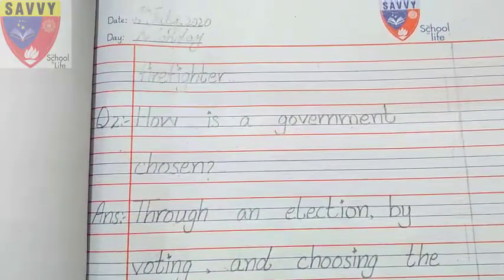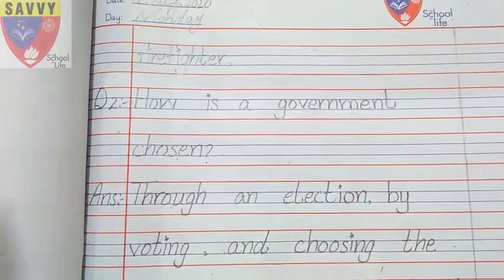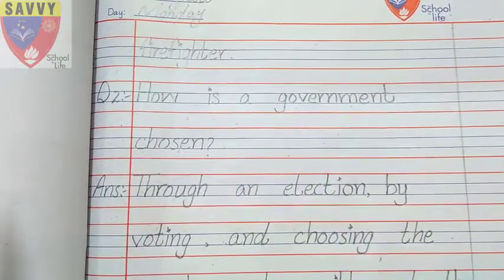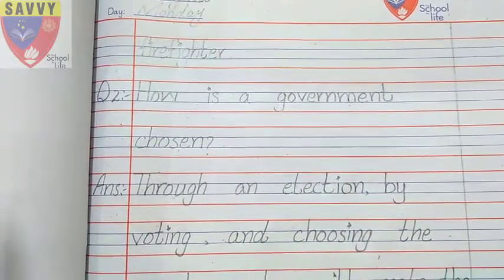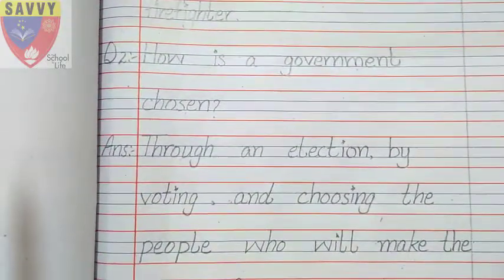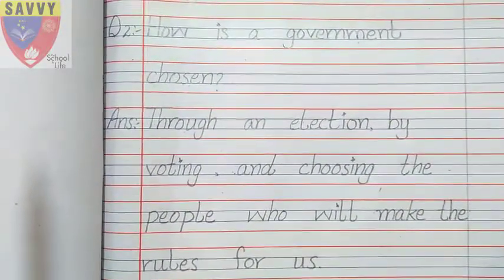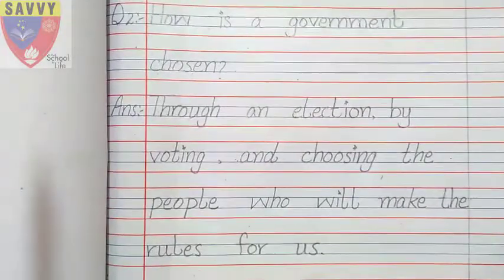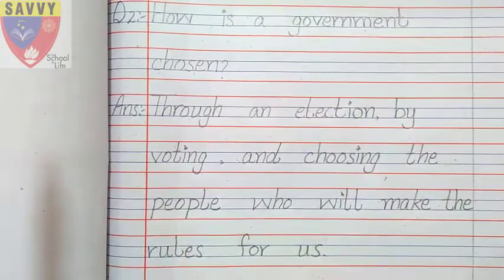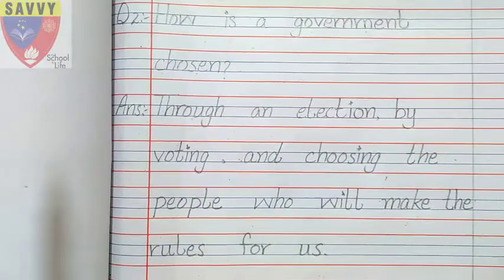Next question: How is a government chosen? Government kaise choose karti hain log. Through an election, by voting and choosing the people who will make the rules for us. First elections are held, then voting takes place, and we choose those people who make rules for us.